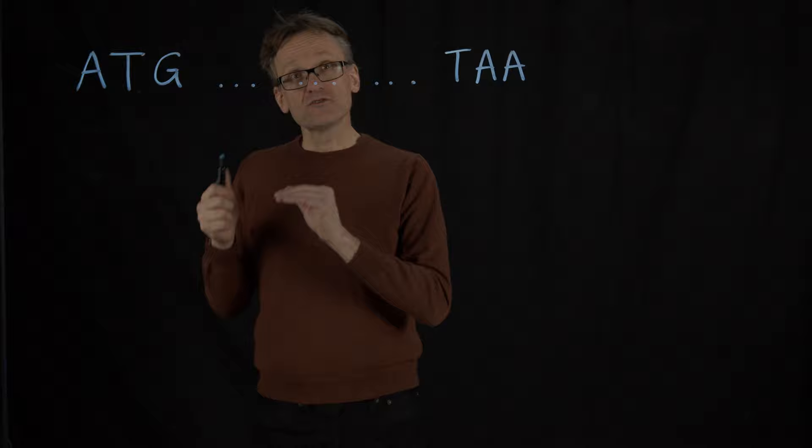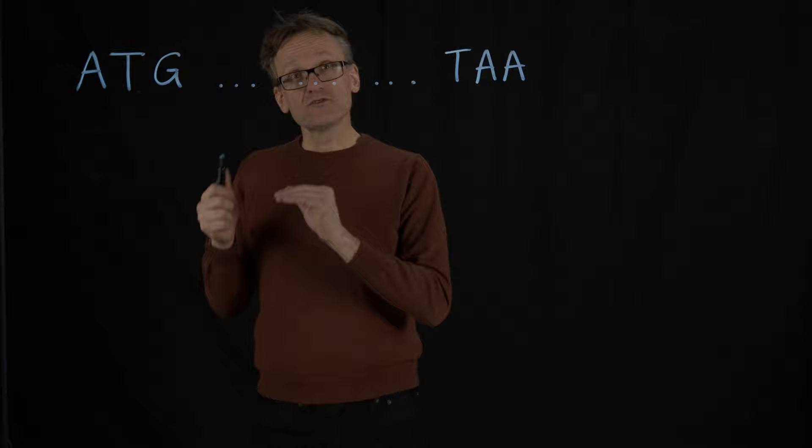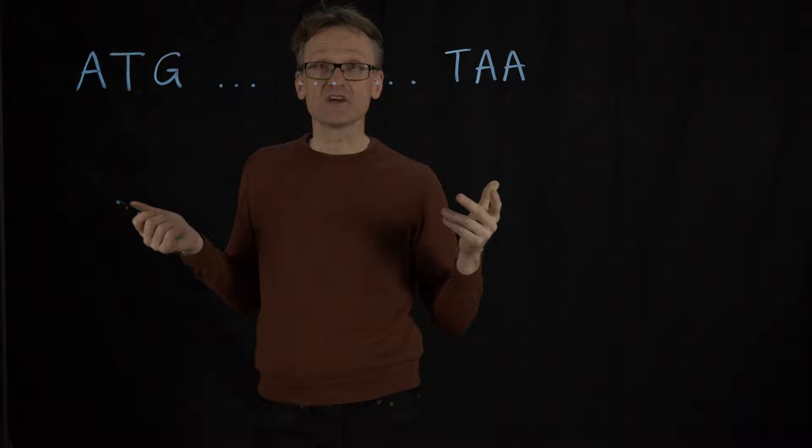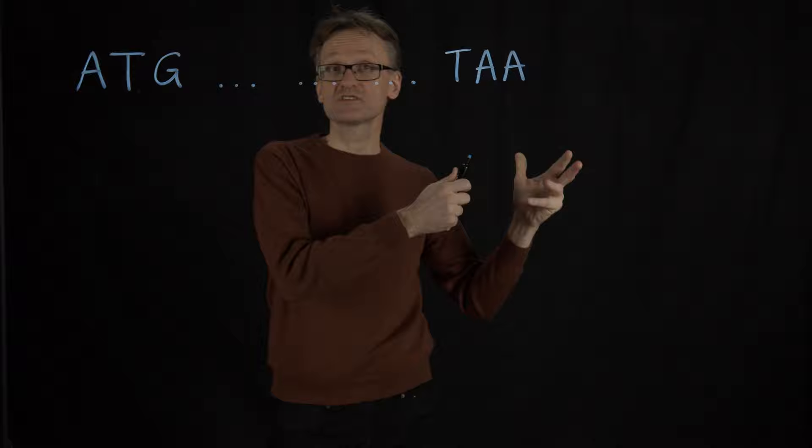Whether it's a bacterium or a human, assuming that I can get this sequence, there are two things I want to ask. First, how does evolution happen here — how do mutations happen? And second, should I work with the DNA sequence or should I work with the protein? And eventually, how does this get to the protein?